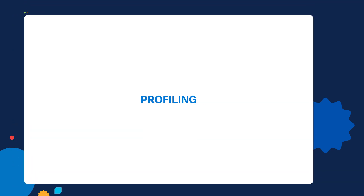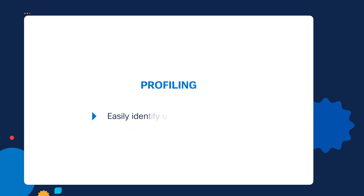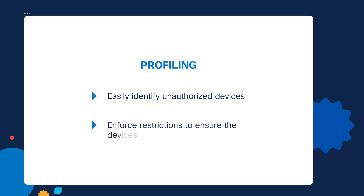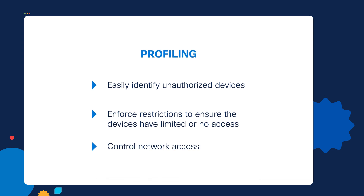This is where we can utilize a Cisco ISE technology called profiling. With profiling, we can very easily identify these devices and enforce some type of restrictions to make sure that they have limited access or no access at all, so that we can have better control over network access. Let's go ahead and look at how profiling works using the Cisco ISE.